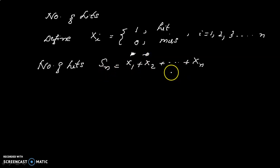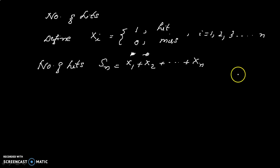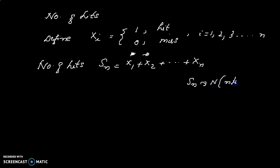We take the sum of the random variables Sn. By the central limit theorem, Sn follows a normal distribution with parameters nμ (mean) and root(n)·σ (standard deviation), and the corresponding standard normal variable is Z = (Sn − nμ) / (root(n)·σ).